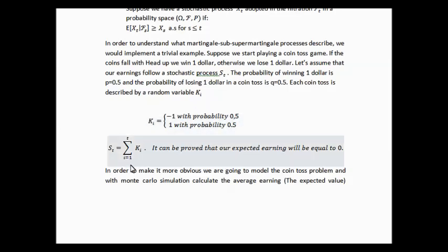So, it's a discrete problem, i equal 1 to t, where t is the last coin toss and overall there are t tosses. It can be proved that our expected earnings will be equal to 0. In order to make it more obvious, we are going to model the coin toss problem with a Monte Carlo simulation, calculate the average earnings, the expected value.